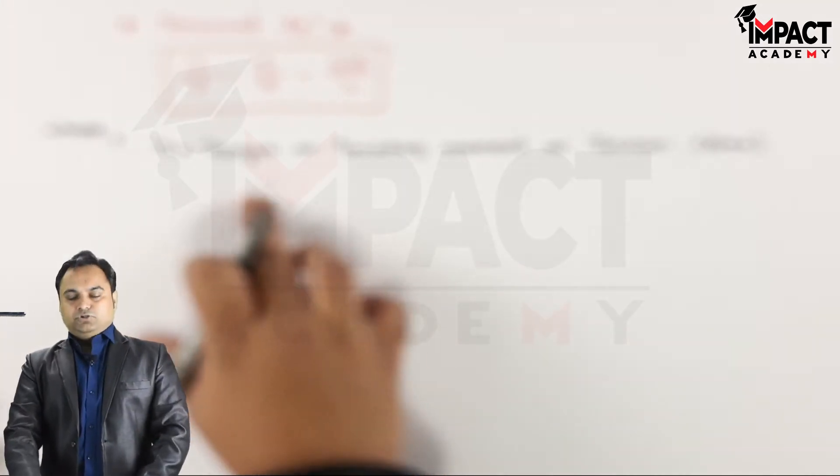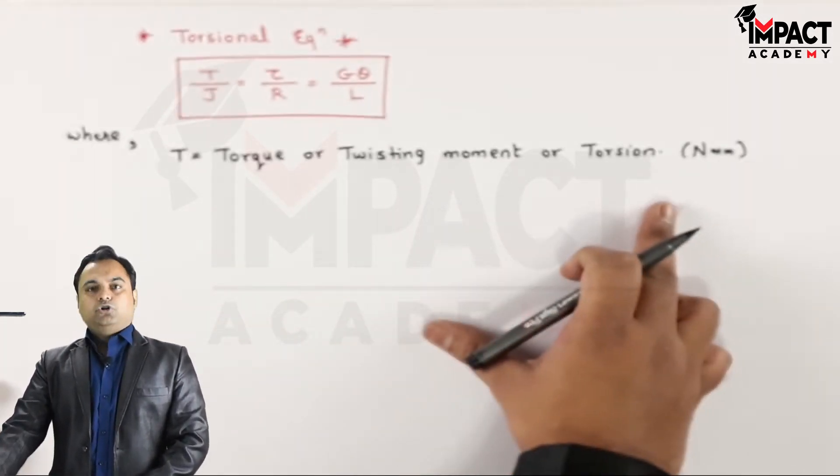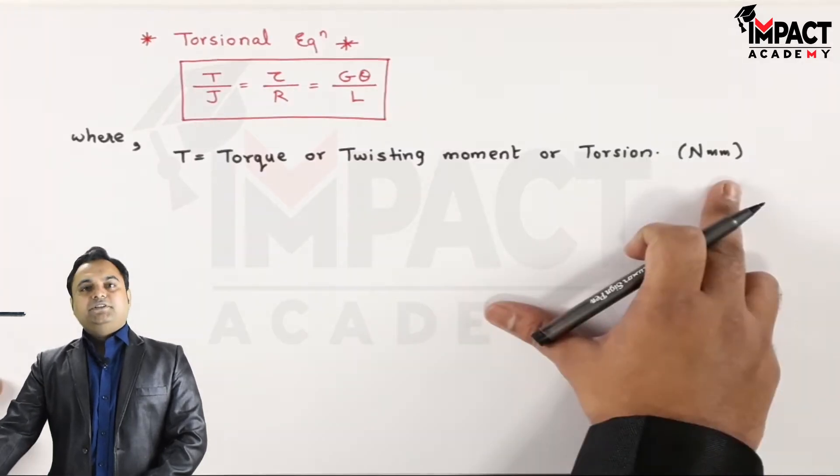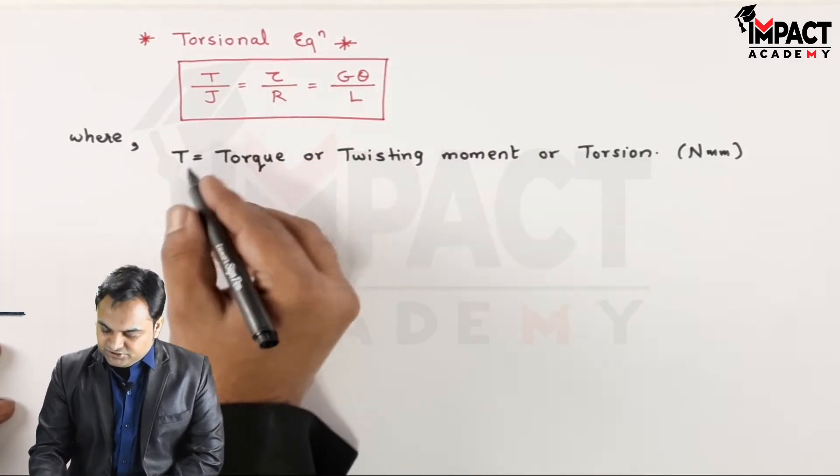So T is the torque, or it is also called as the twisting moment or torsion, and the unit is newton millimeter. Next J.